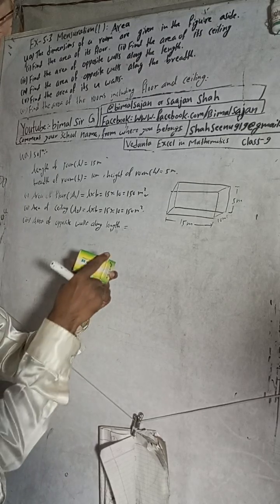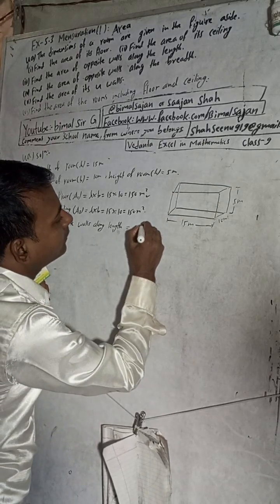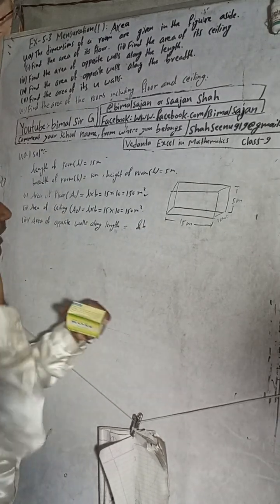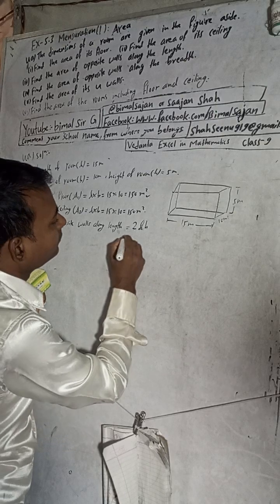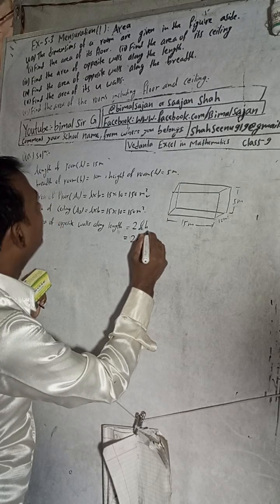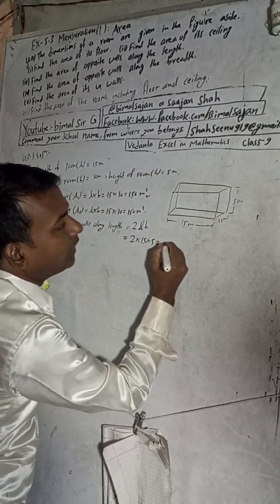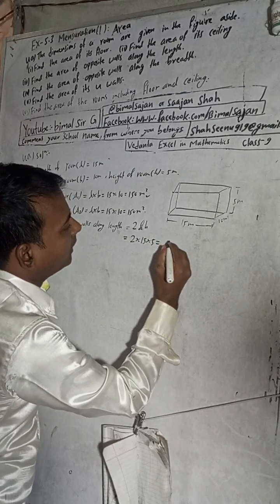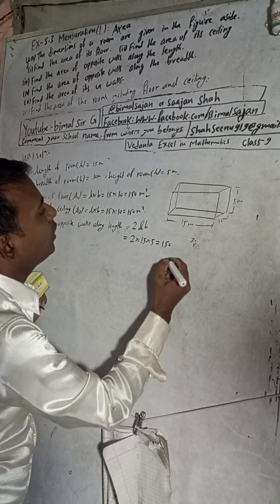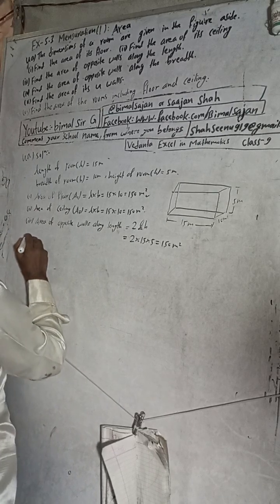The formula for walls along length is L into height. For front and back it's the same, so two times: 2 × L × H = 2 × 15 × 5 = 150 meter square.